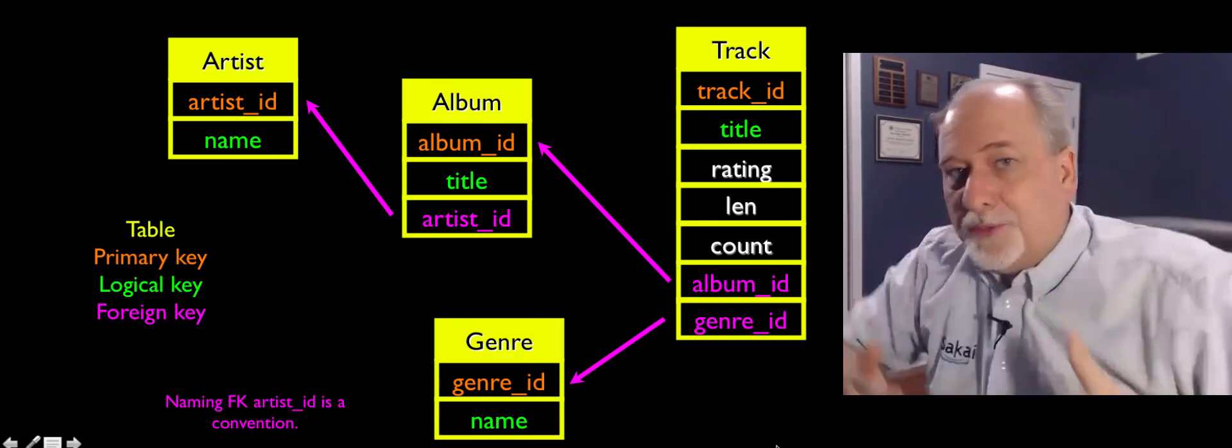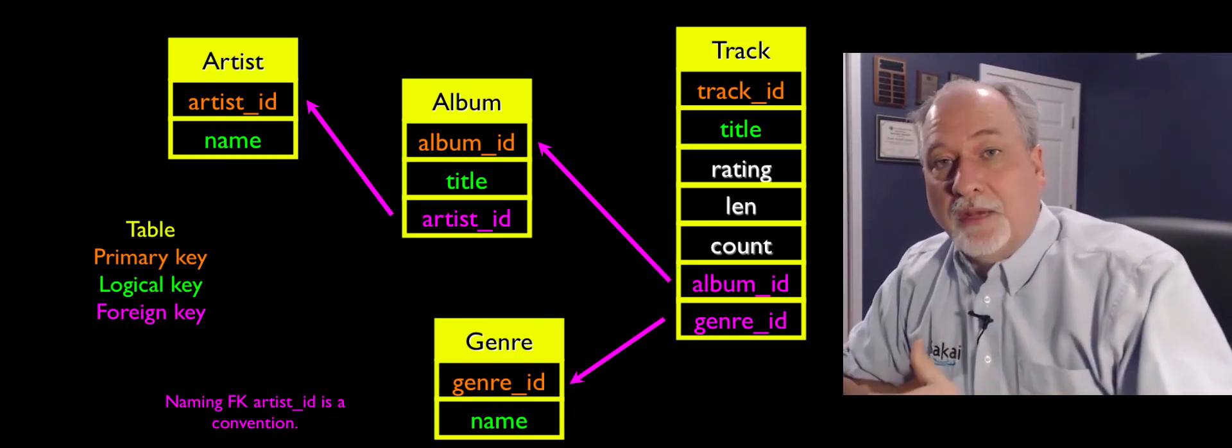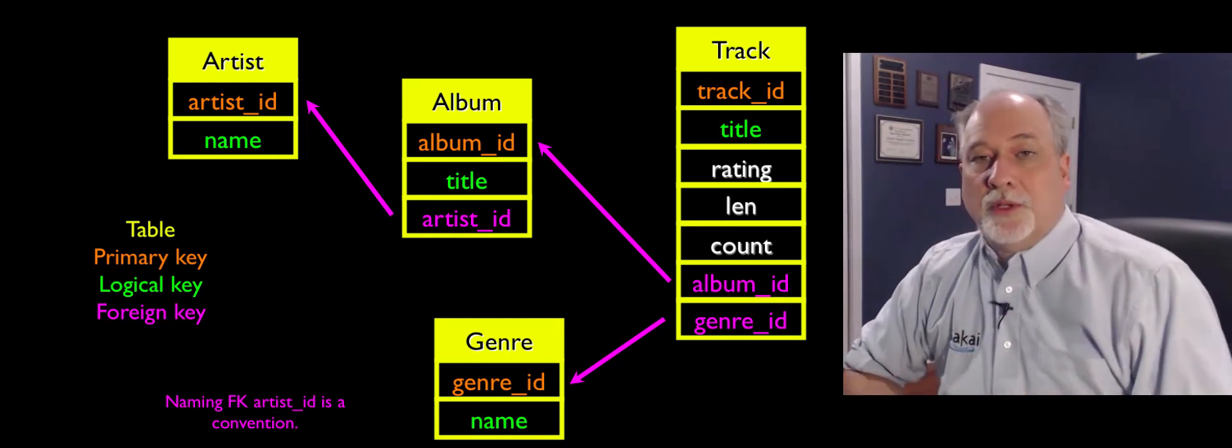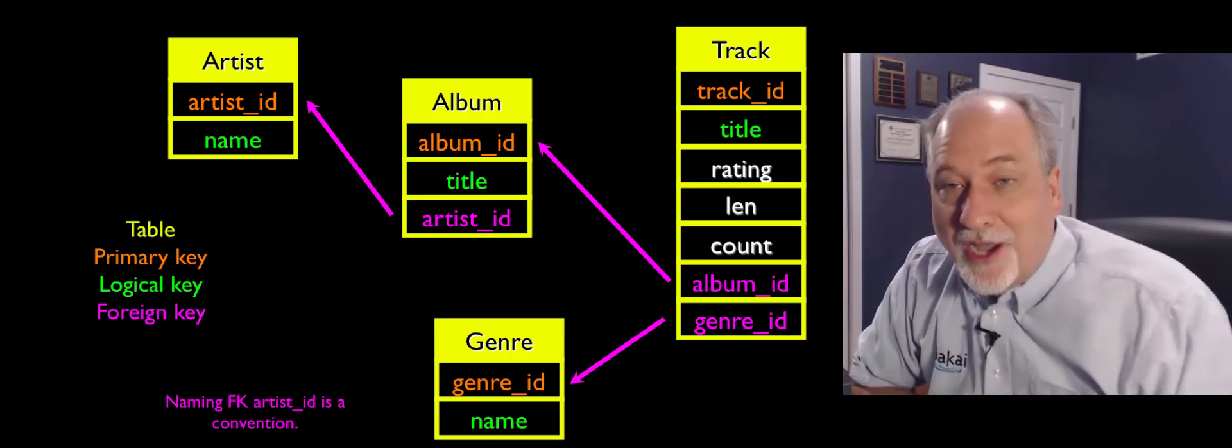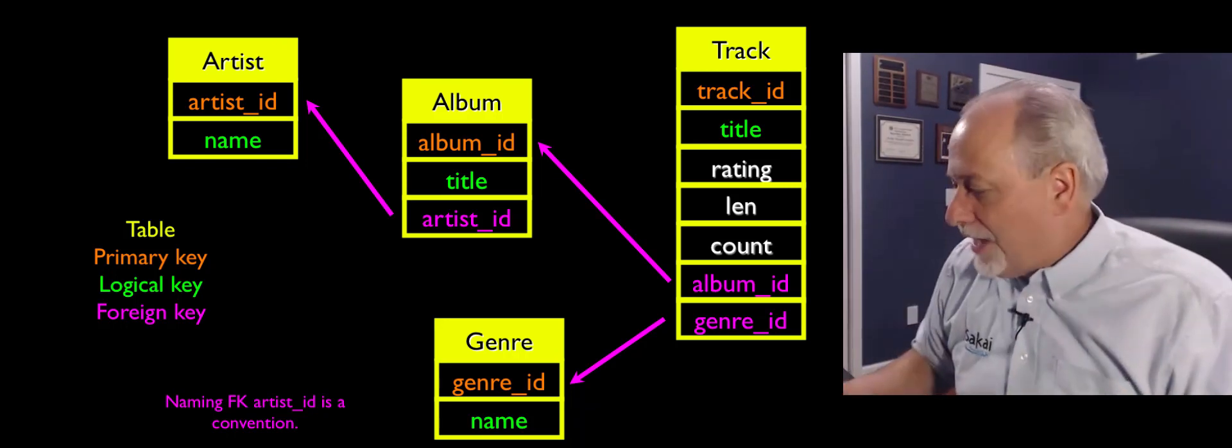And the physical representation, the way we're gonna put it in the database, because we have to model these arrows. Because the database doesn't have the arrows. We just have to say there's a column, and that's our way of keeping track of the arrows.